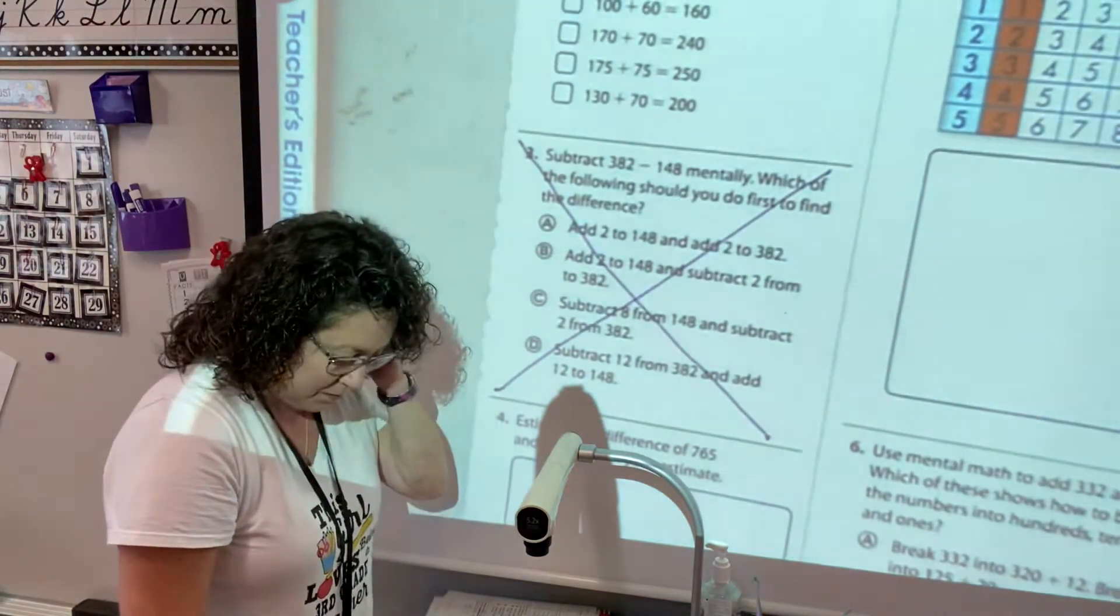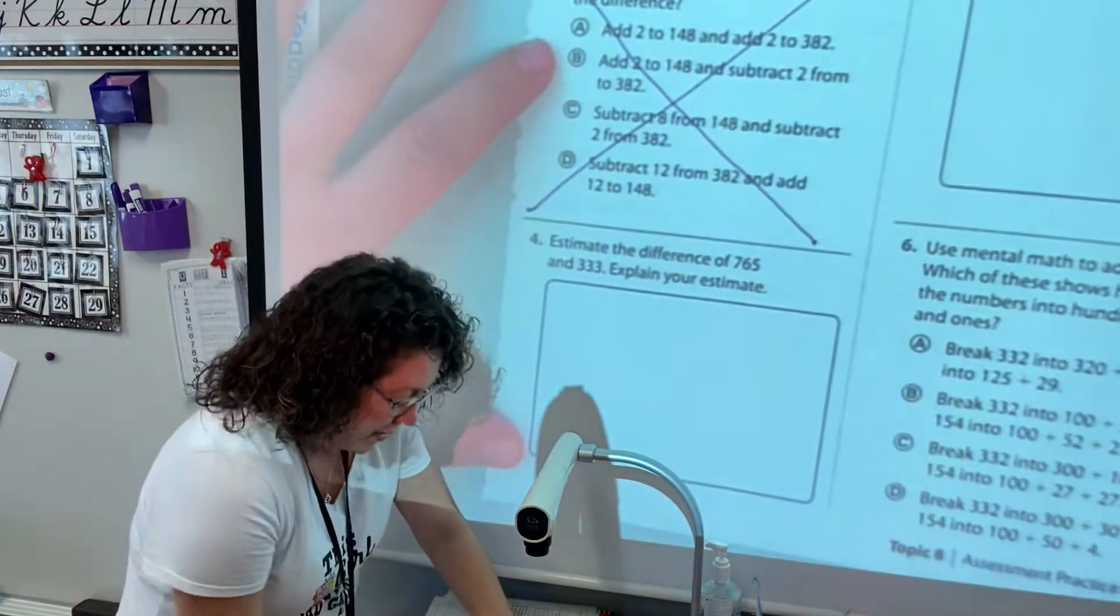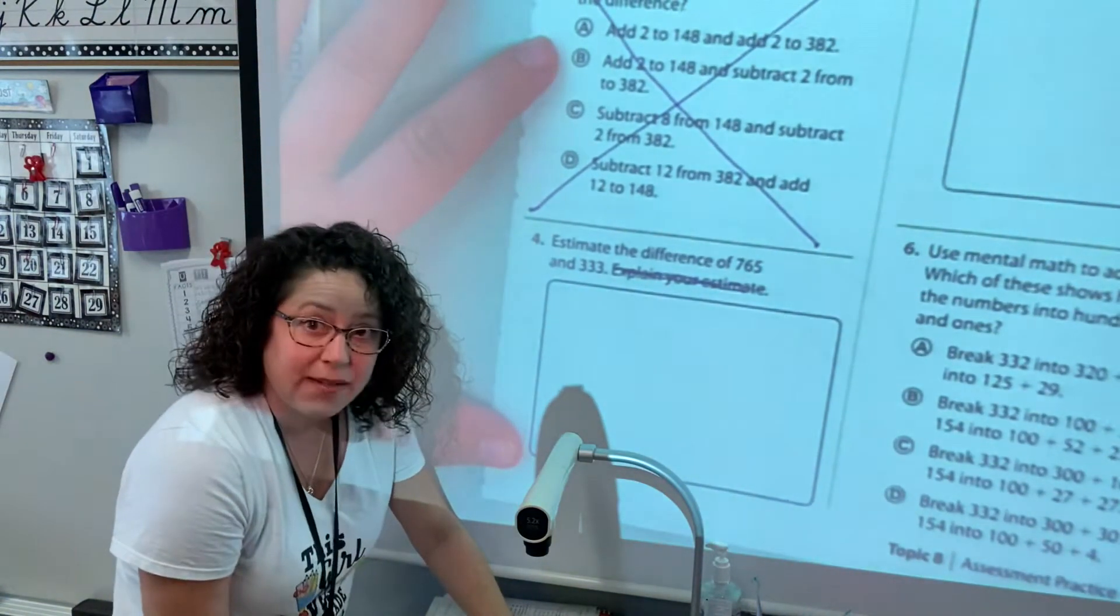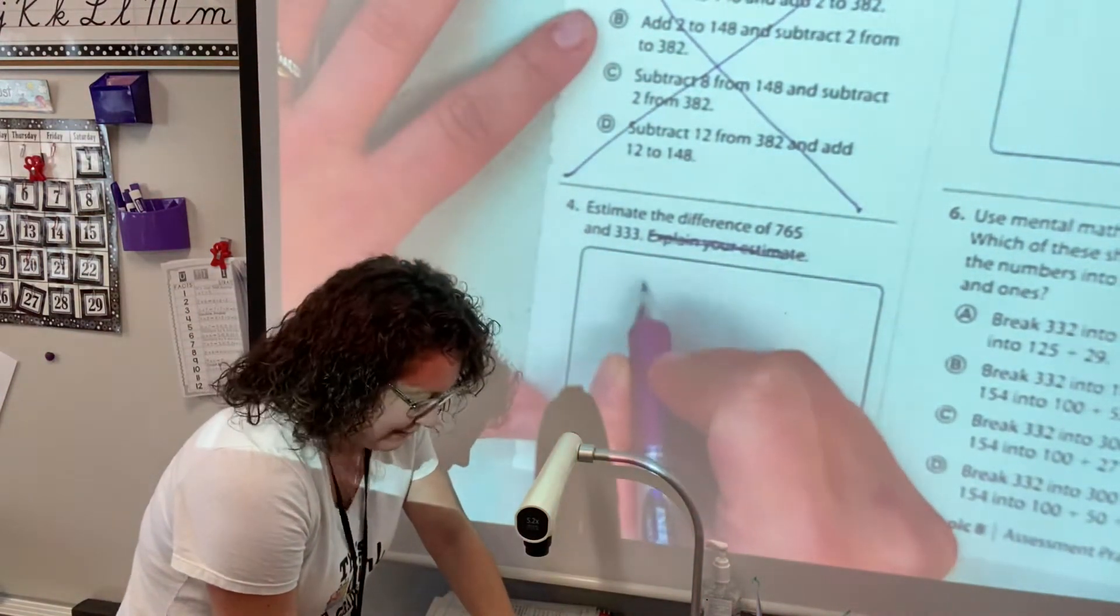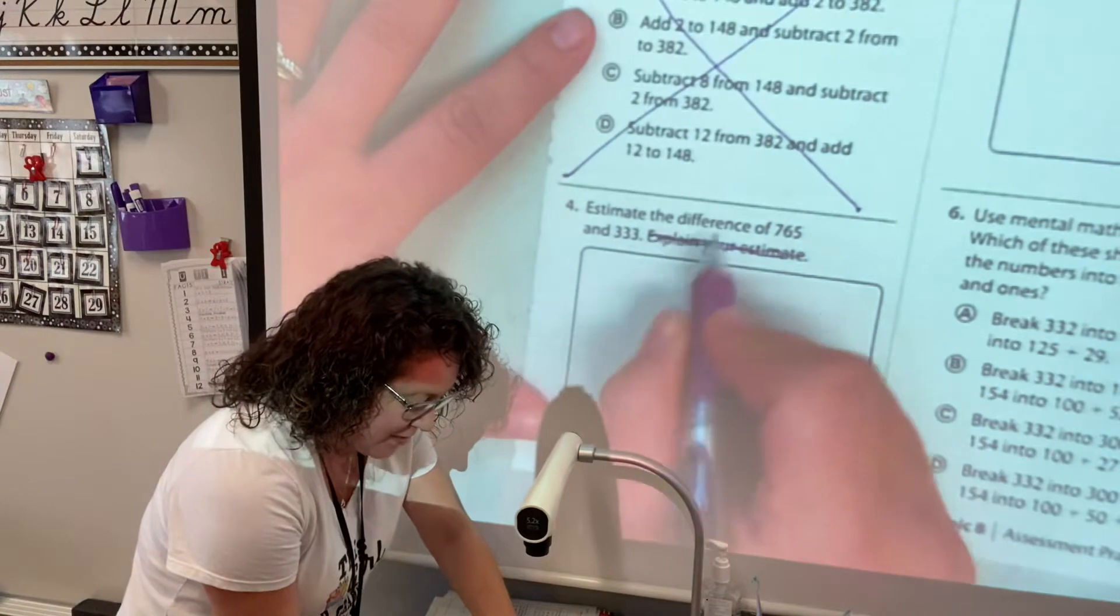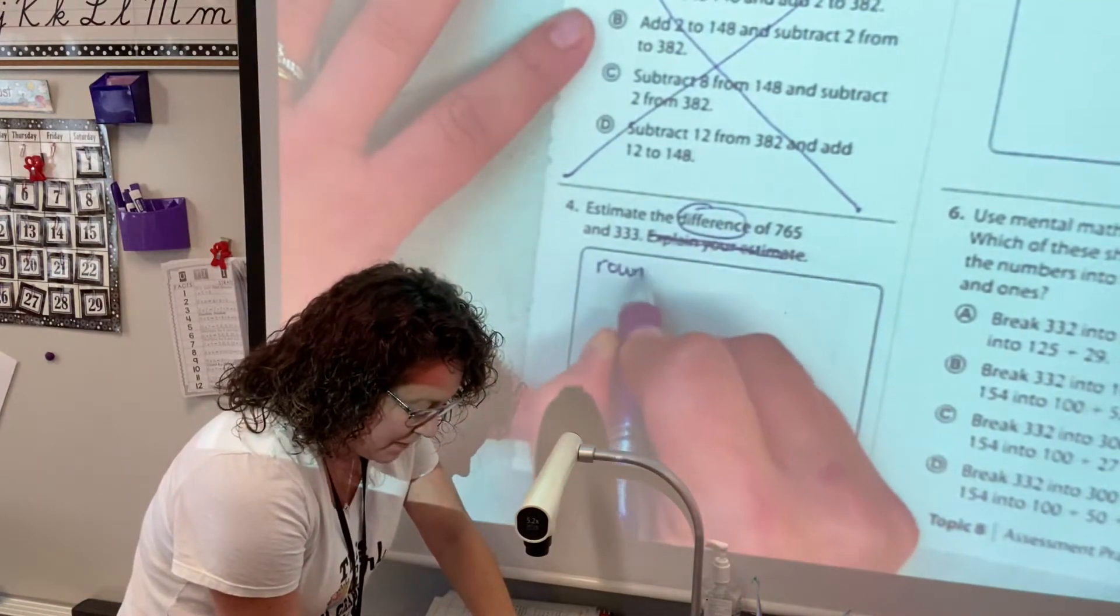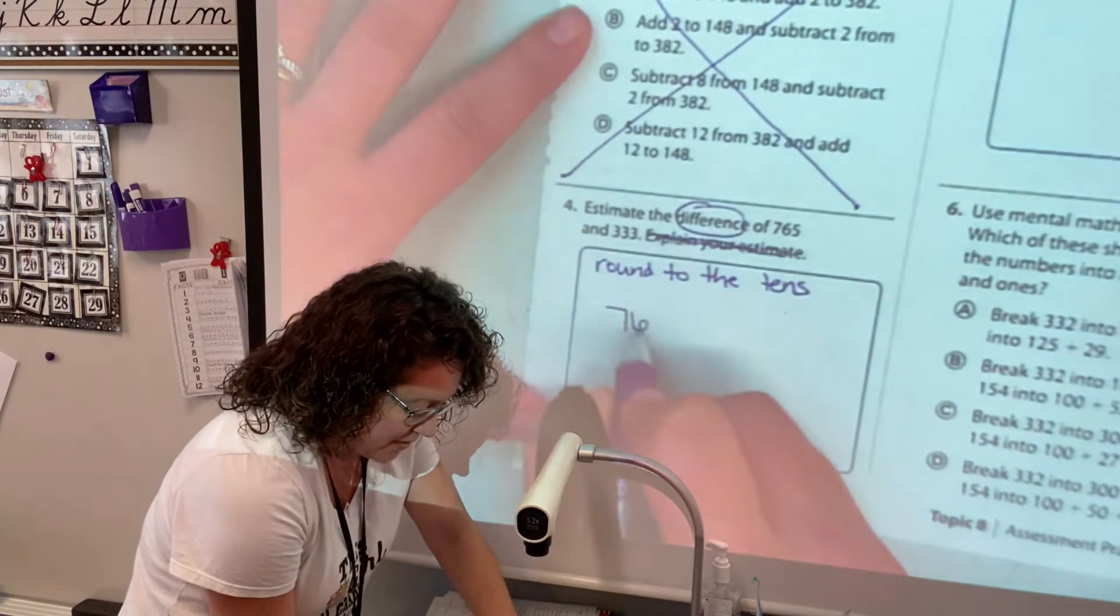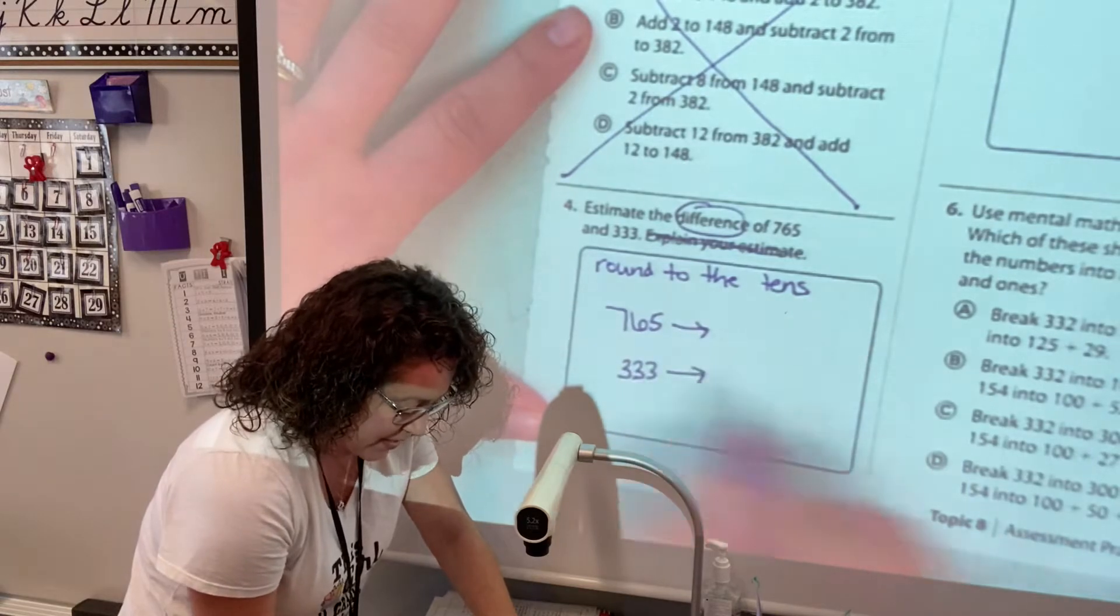Number four, it says explain your estimate. You don't have to explain. You are going to estimate the difference of 765 and 335. Remember, estimating the difference means you're going to subtract, so you're going to round to the tens, okay. So 765 rounded to the tens and 333 rounded to the tens, then you would subtract.